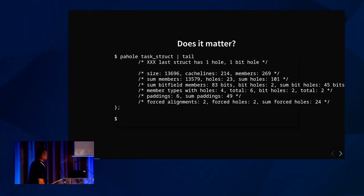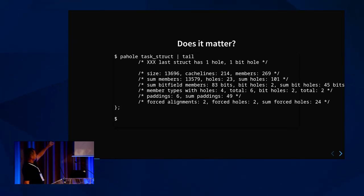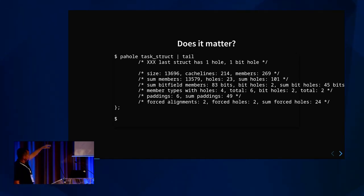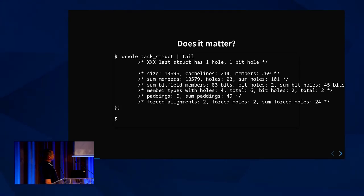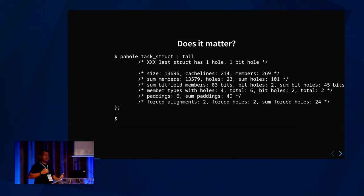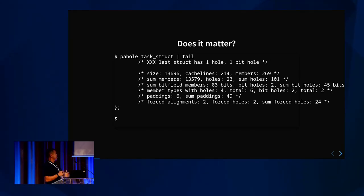If you look on a system today with Pahole installed — and if you are developing the kernel you're going to have it — you can run 'pahole task_struct'. It will get BTF information and at the end you'll see that it's a very large data structure with lots of stuff, lots of ways where space is being wasted inside it because it has subtypes, and those subtypes have paddings and alignment holes in the middle.